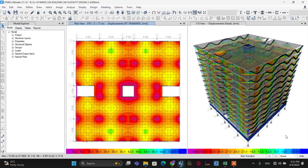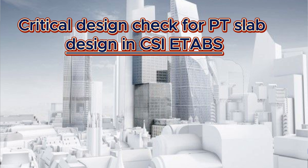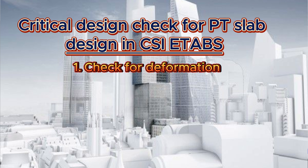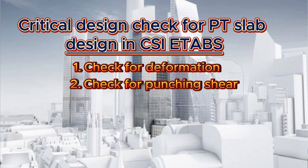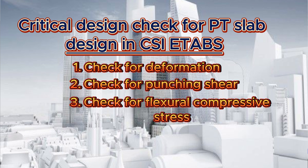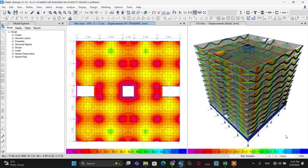Hey all, welcome back to my channel. Today's tutorial is all about three critical design checks for a post-tension slab design in CSI ETABS program. The first point we are going to check is deformation, the second point is punching shear, and the last point is the check for flexural compressive stress under long-term loss. Structural engineers must note these basic design checks to ensure safety and avoid failure. We will discuss in detail with a practical project model.